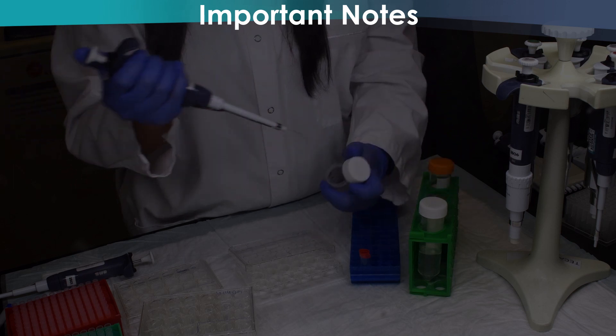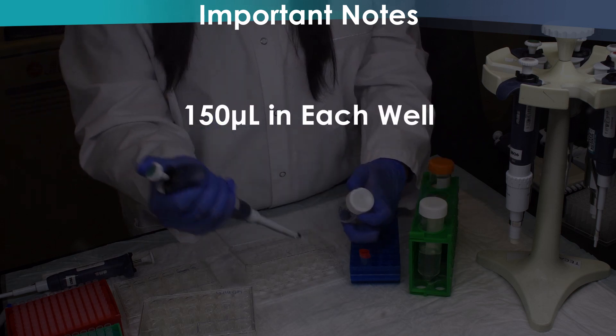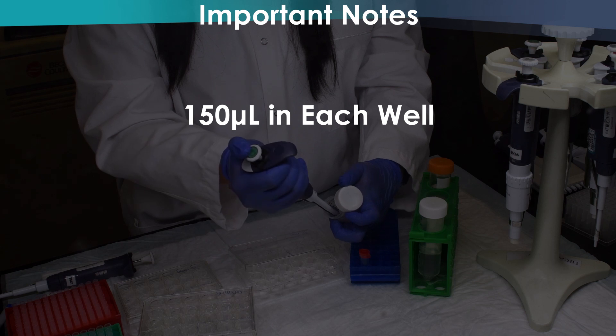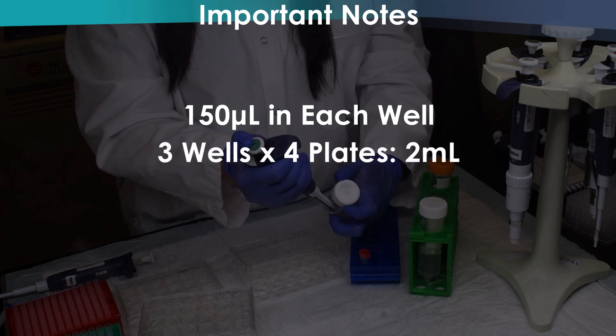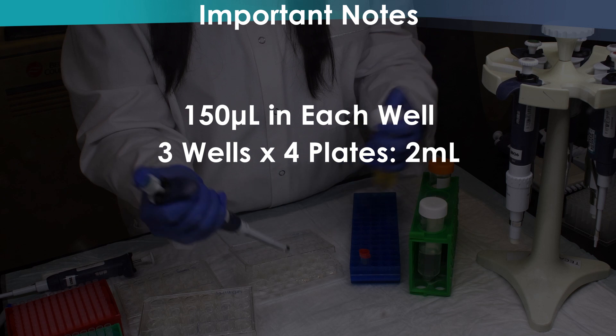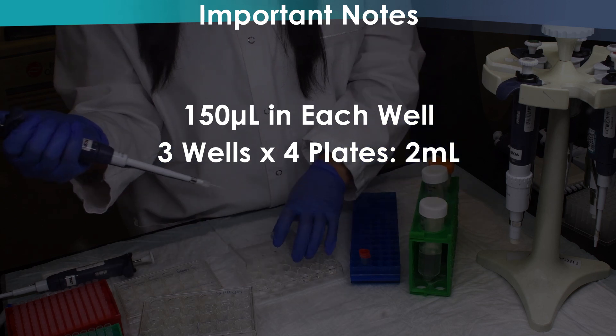You will want to dilute enough test article to be able to load each well with 150 microliters of test article in incubation medium. For example, if you have four time points with each treatment in triplicate, you will need approximately two mils of medium with test article.